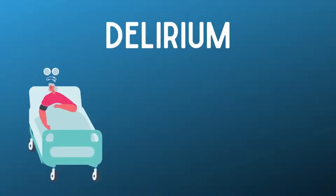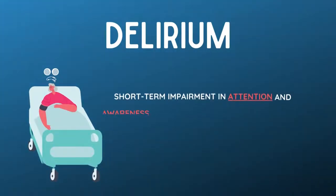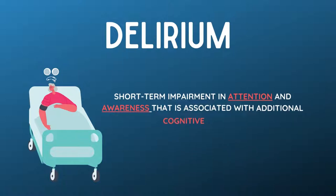Delirium is defined by DSM-5 criteria as a short-term impairment in attention and awareness that is associated with additional cognitive deficits. It is characterized by an alteration of attention, consciousness, and cognition, with a reduced ability to focus, sustain, or shift attention.